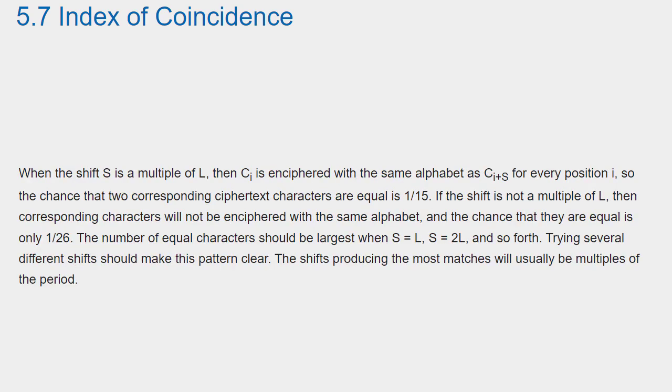When the shift s is a multiple of L, then ci is enciphered with the same alphabet as ci plus s for every position i, so the chance that two corresponding ciphertext characters are equal is 1 over 15. If the shift is not a multiple of L, then corresponding characters will not be enciphered with the same alphabet, and the chance that they are equal is only 1 over 26. The number of equal characters should be largest when s equals L, s equals 2L, and so forth.